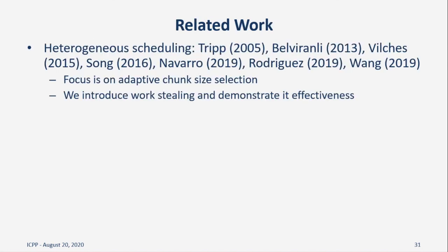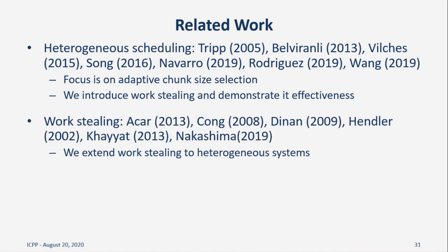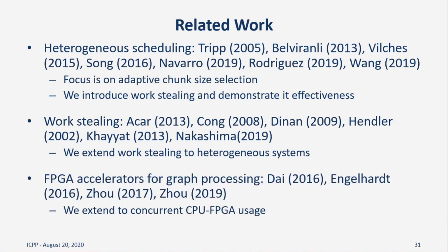We now discuss some of the related work in this field and where we sit in reference to the world. There has been considerable work done in the field of heterogeneous scheduling. The more closely related work also identifies non-linearity in accelerator performance, but focuses on chunk self-scheduling and adaptive chunk sizes. We show that work stealing is a viable and effective approach. There is also considerable work with relation to work stealing as it applies to graph processing. We extend work stealing to tightly coupled heterogeneous platforms and address the challenges that arise from this context. There also exists much work on graph processing acceleration on FPGAs, and we extend the common offload model to concurrent CPU usage as well.